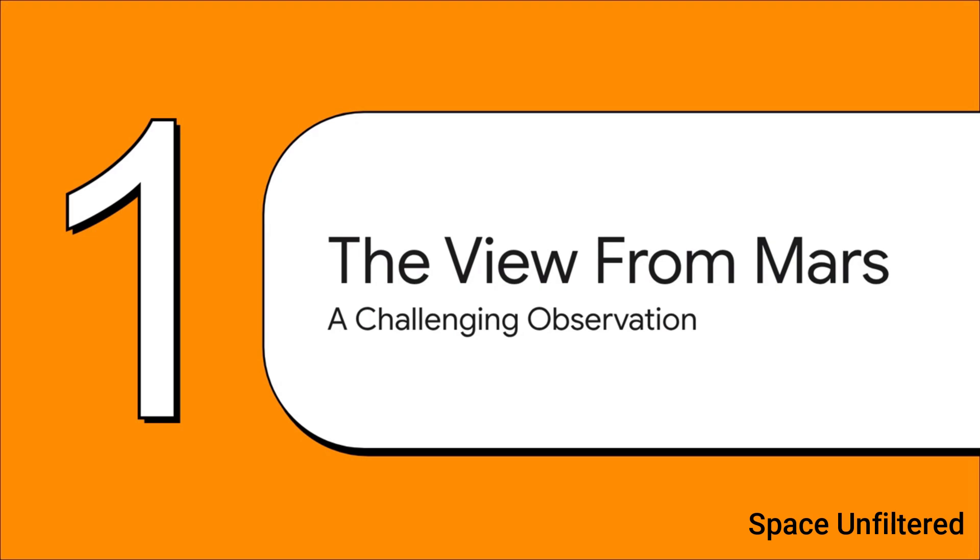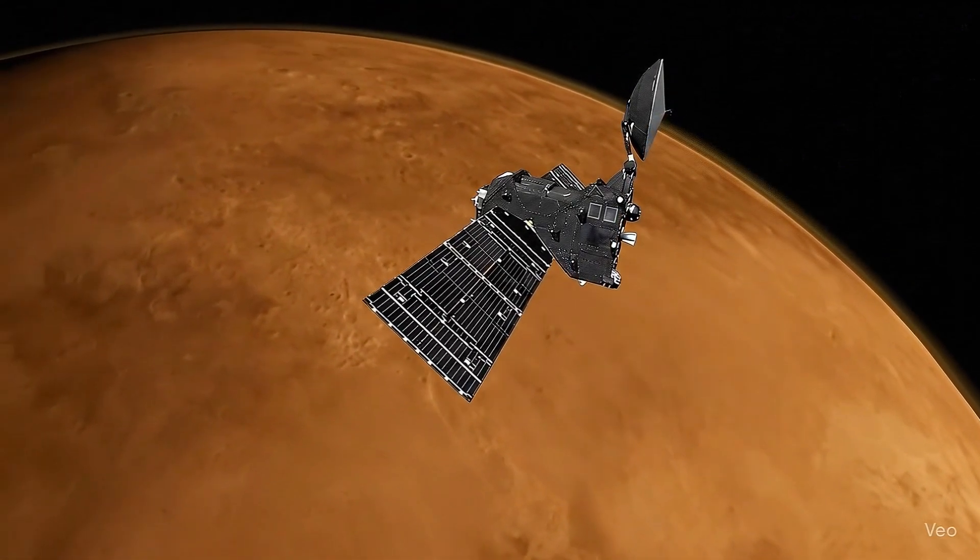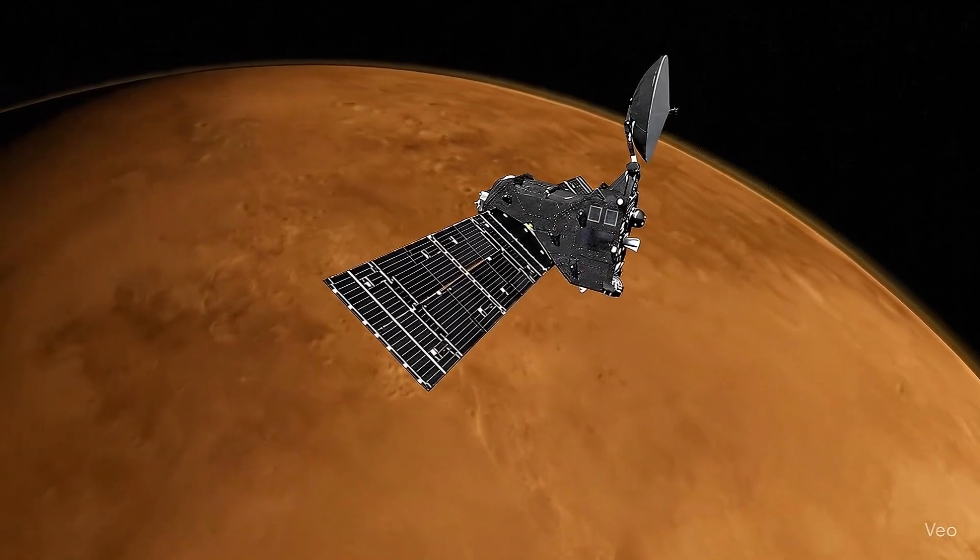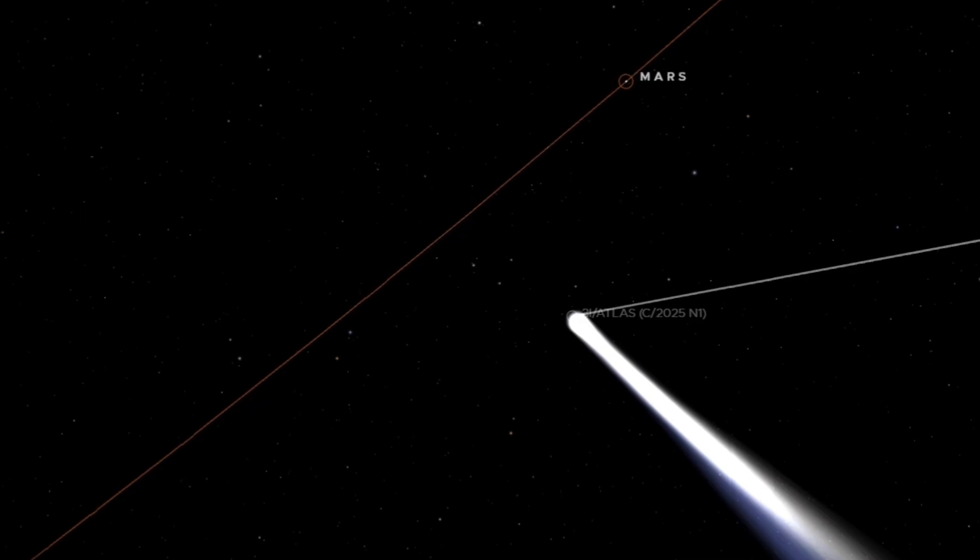First, we have to understand just how challenging this observation was. This was a huge technical achievement, pushing an instrument right to its absolute limits. Let's think about the distance: 3I/ATLAS was a full 30 million kilometers away from the ExoMars orbiter. That's about 80 times farther than the distance from the Earth to our Moon.